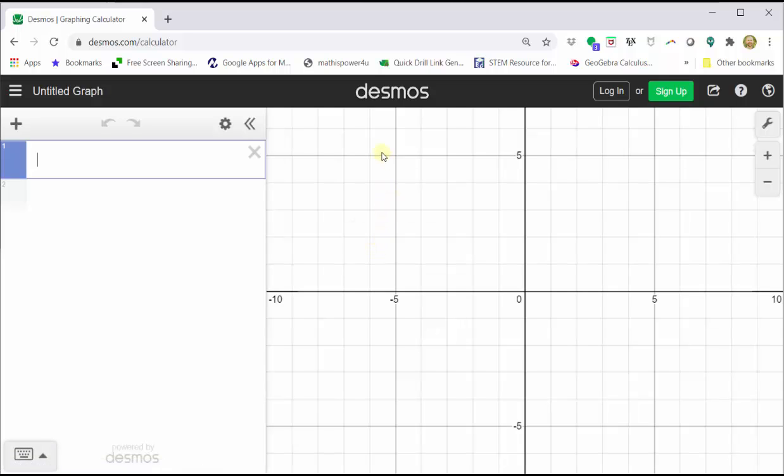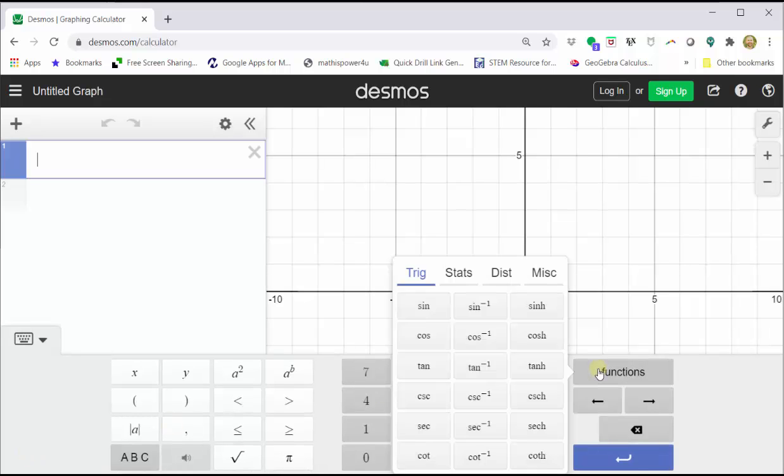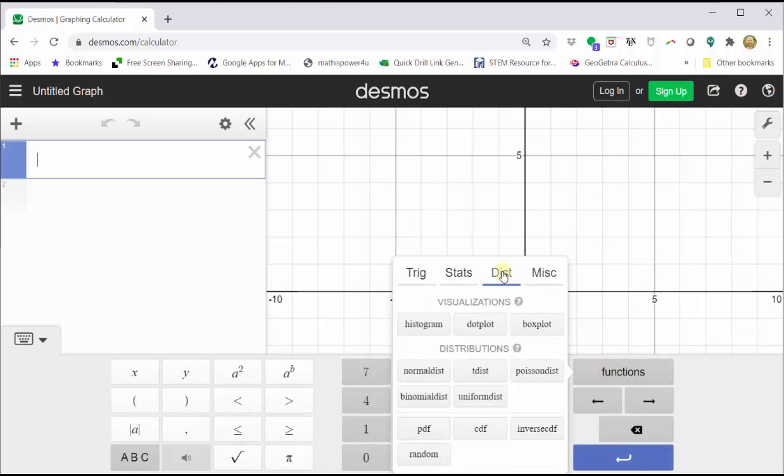Next, let's open the Desmos keypad by clicking the show keypad button, then click functions, then click dist for distributions. We first click normal distribution.